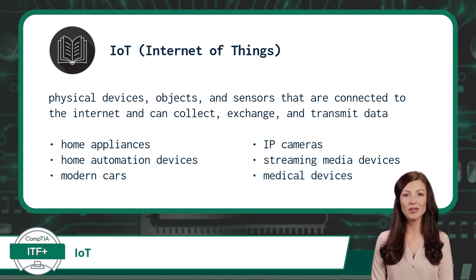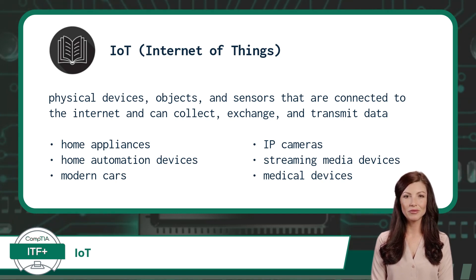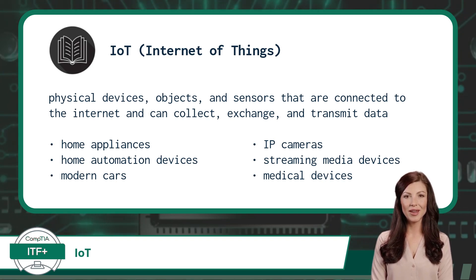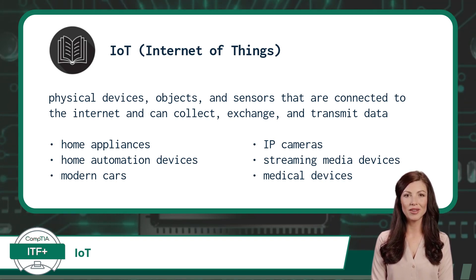IoT devices have been deployed in various ways. You can find IoT devices for home appliances, home automation, in modern cars, with IP cameras, streaming media devices, and medical devices, to name a few.